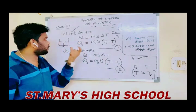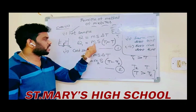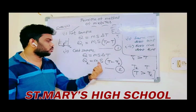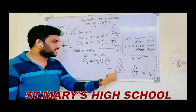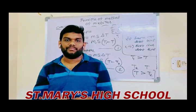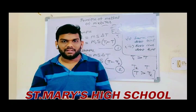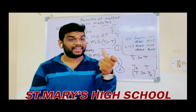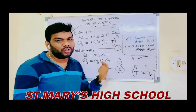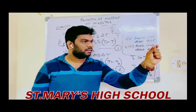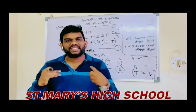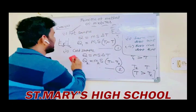Now these two equations are equal because heat lost by hot bodies equals heat gained by cold bodies. So Q1 = Q2. Setting Equation 1 equal to Equation 2: M1·S·(T1 − T) = M2·S·(T − T2). Since both substances are water, S is the same on both sides and cancels out.